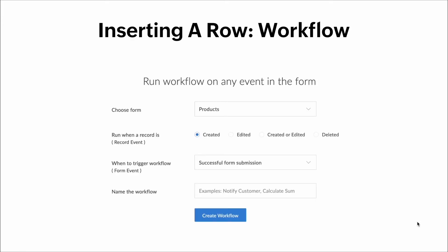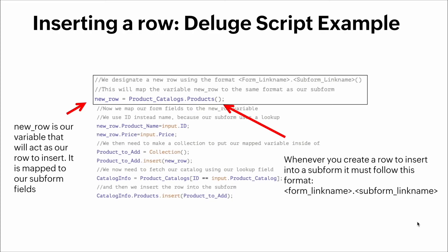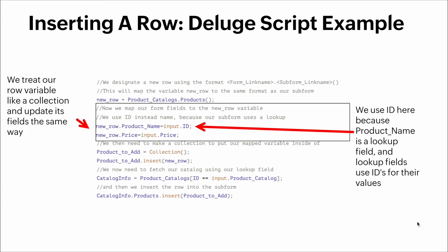Here's how we create the workflow: we choose the form — in this case it's called Products — run this workflow when a new record is created, and trigger it on a successful form submission. Here's the Deluge script: the new_row variable acts as a row to insert and is mapped to our subform fields. Whenever you create a row to insert into a subform, you must follow this format: form_link_name.subform_link_name. We treat the row variable like a collection and update its fields the same way.